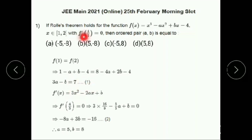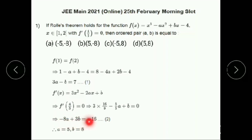Also, given that f'(4/3) = 0. On differentiation, we get f'(x) = 3x² - 2ax + b. Therefore, f'(4/3) = 3 × (16/9) - (8/3)a + b = 0. Then we get another expression: -8a + 3b = -16. This is equation 2. Solving equation 1 and equation 2, we get a = 5 and b = 8.